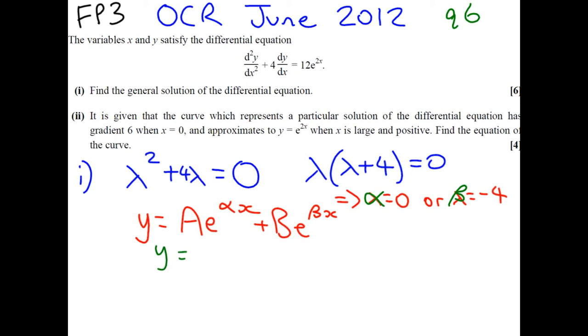Now, e to the 0 is going to give us 1, so our complementary function is going to be A plus Be to the minus 4x.